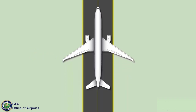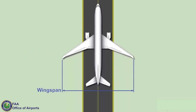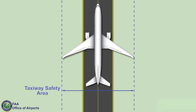The taxiway safety area is a defined surface extending beyond the standard taxiway pavement on both sides of the taxiway. The taxiway safety area width is equal to the ADG maximum wingspan dimension. The taxiway safety area surface beyond the pavement supports the occasional passage of aircraft, snow removal equipment, and aircraft rescue and firefighting equipment. The taxiway safety area is kept clear of objects except for those located there because of their function, and is graded to prevent accumulation of standing water.